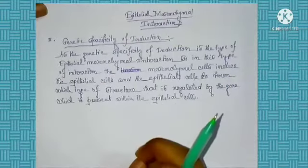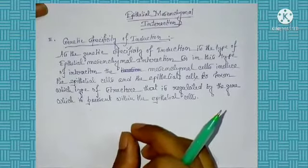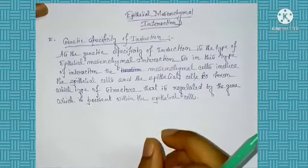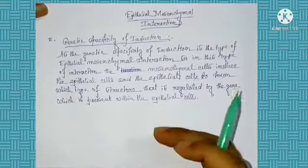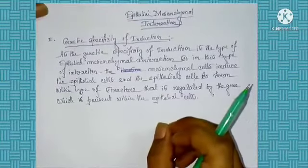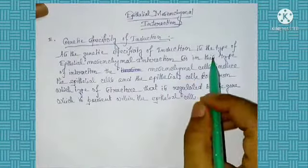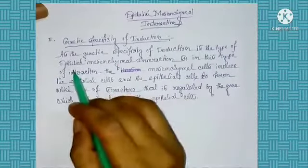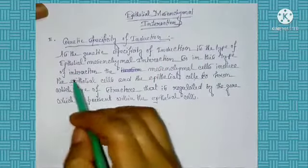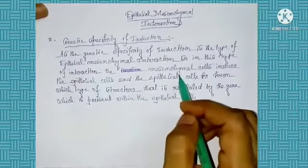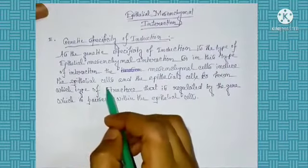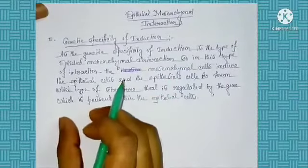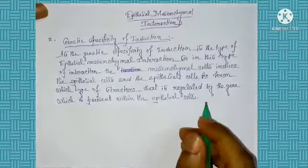As in this type of interaction, gene plays an important role to form a particular tissue or organ structure. So this type of interaction is known as genetic specificity of induction. The mesenchymal cell induces the epithelial cell, and which type of structure the epithelial cell forms is regulated by the gene which is present within the epithelial cell.